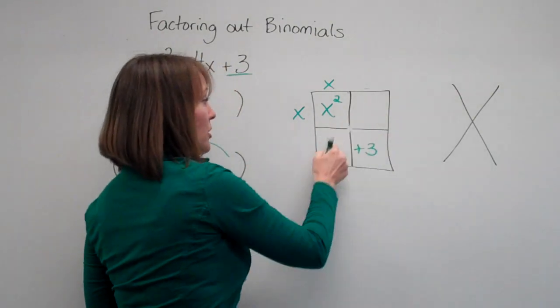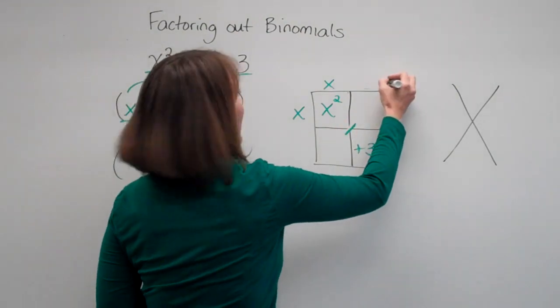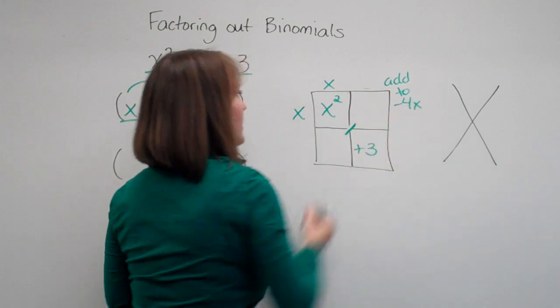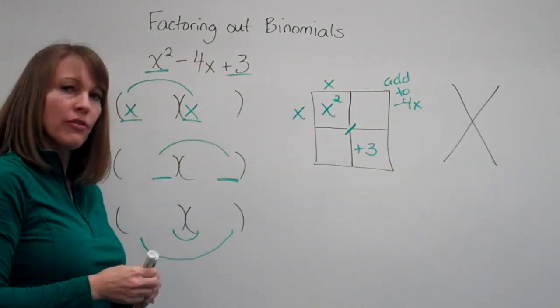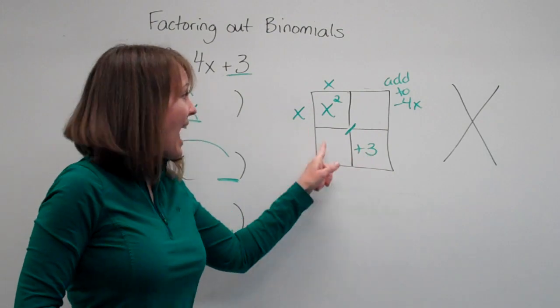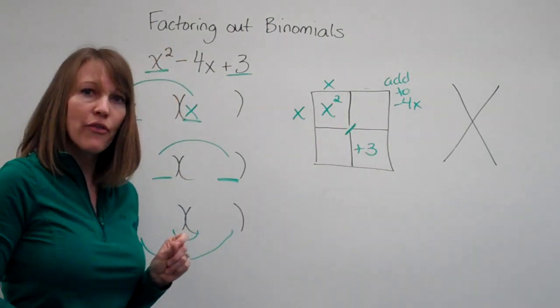And we had some terms which we added up and they added up to negative 4x. So what we're looking for then are two numbers that multiply together to get 3 and add up to get 4.